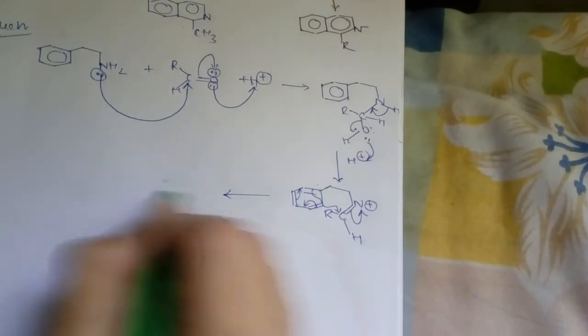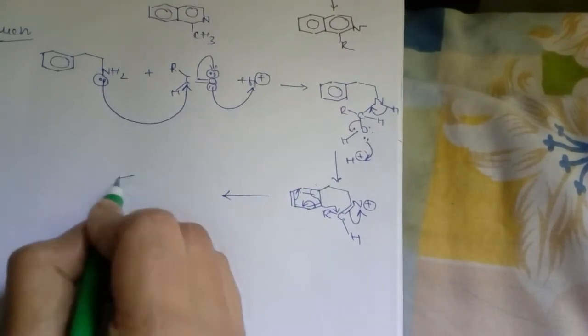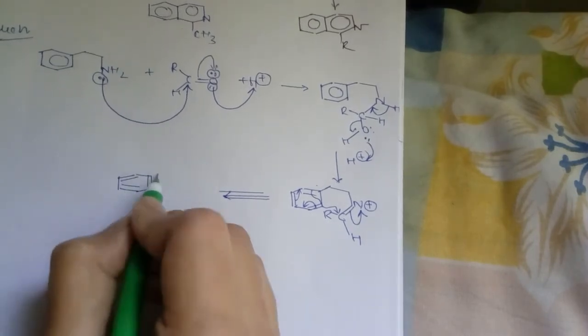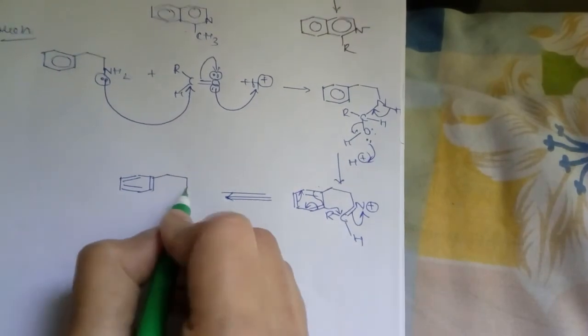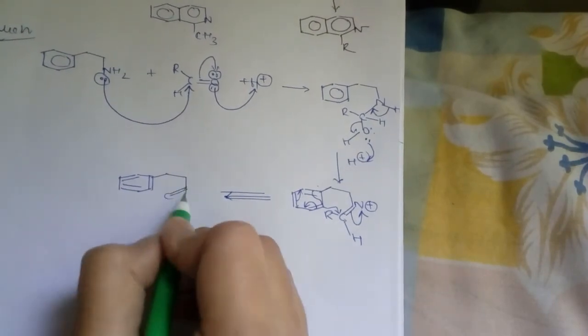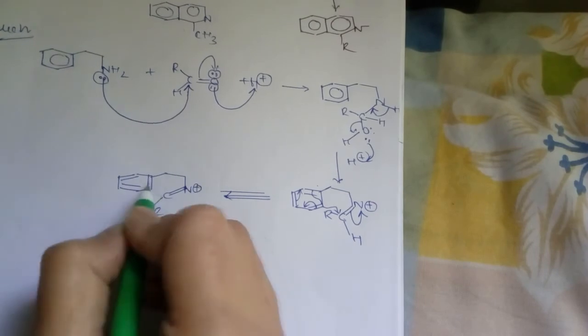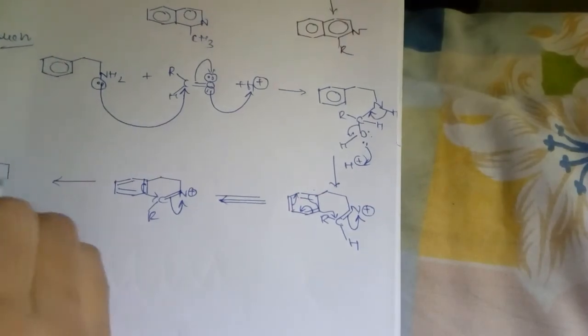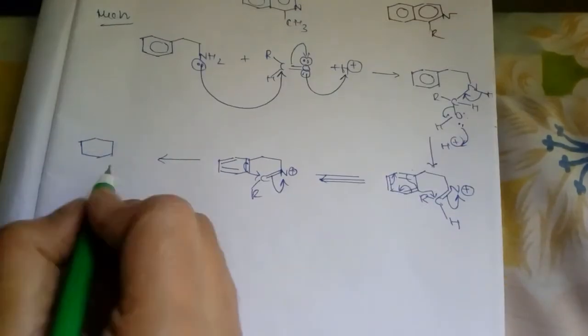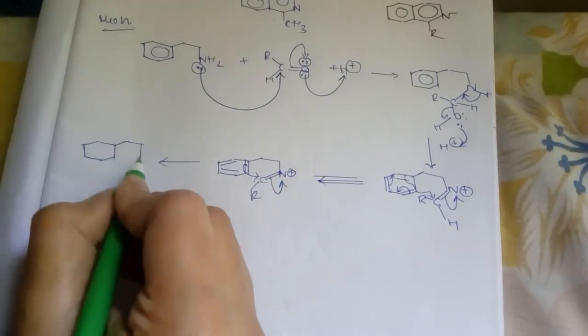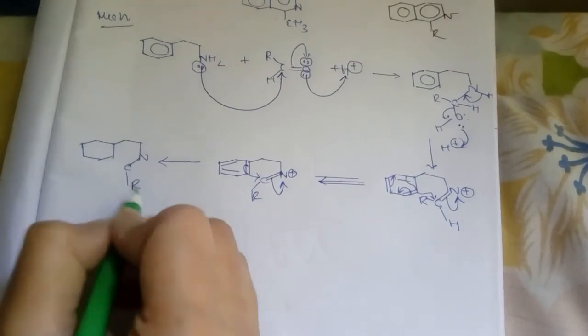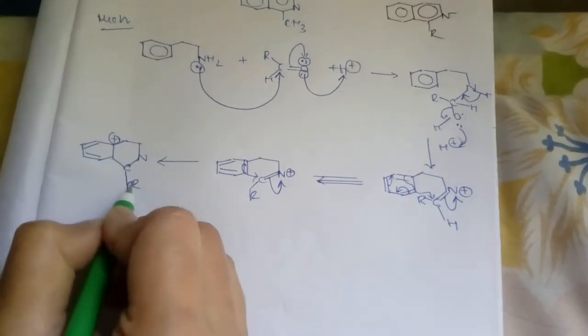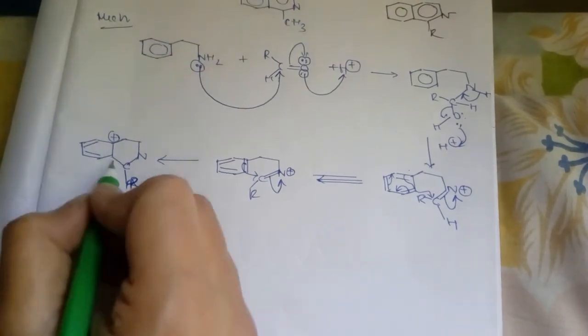Now positive charge will generate there. Actually the reaction is like that - this compound is like this actually, and this will attack and this bond will rotate and ultimately a positive charge will generate in this position.